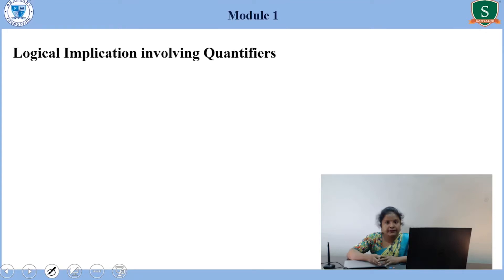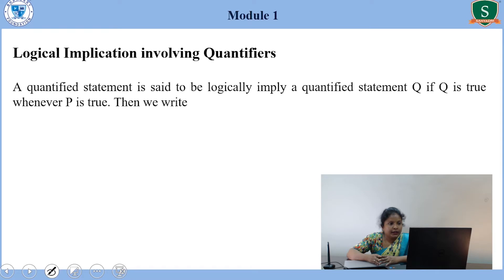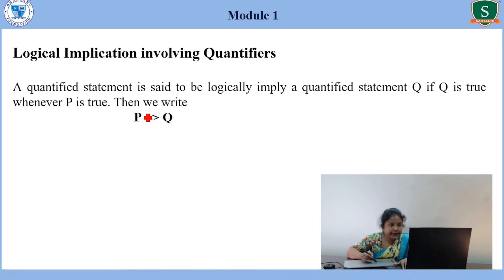Logical implication in quantifiers is mainly used to check the validity of an argument. To check whether a given argument is valid or invalid, we need to use logical implication. A quantified statement P is said to logically imply a quantified statement Q if Q is true whenever P is true. Then we can write it as P implies Q.